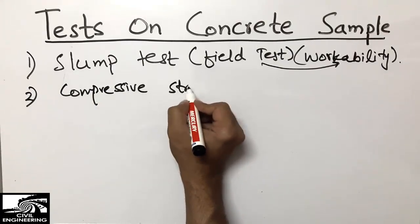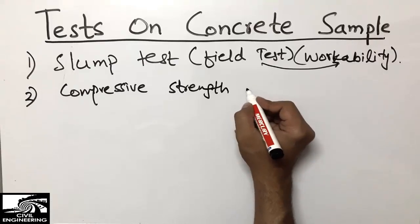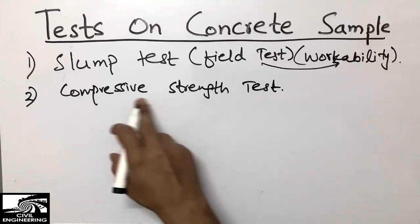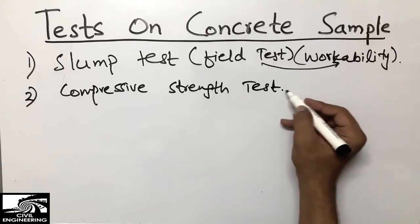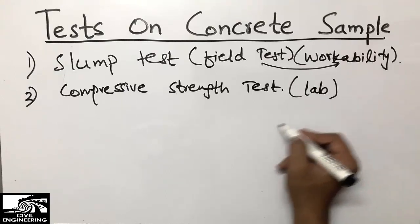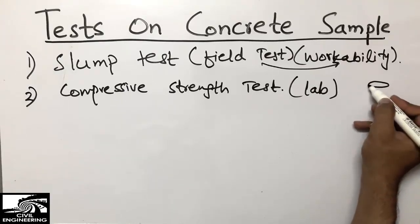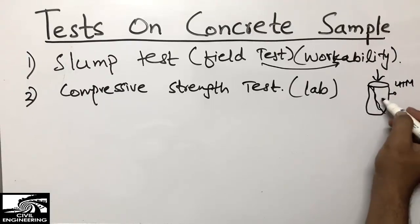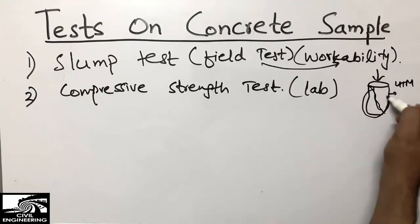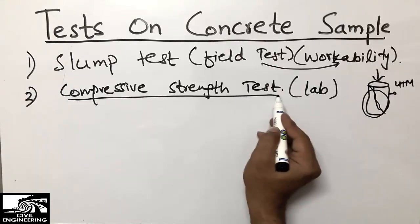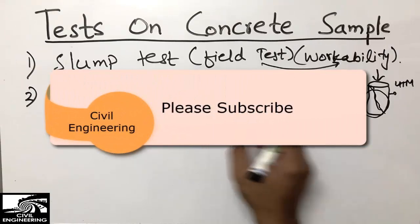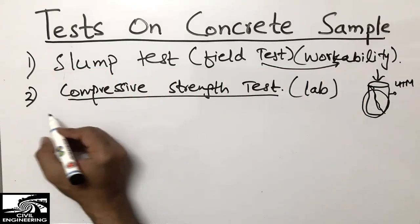The second one is the compressive strength test. This is used to find the compressive strength of concrete. It is a lab test — we make a cylinder of concrete, put it in the UTM (Universal Testing Machine), apply a load, and it will break into two pieces. In each construction project, you must perform this test before the execution of your project.